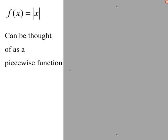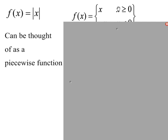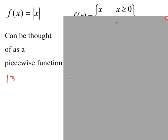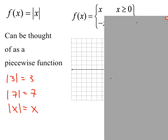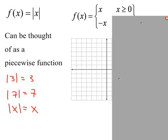Another classic piecewise function you might not think of is absolute value. When x is positive, the absolute value of x is just x — for example, |3| = 3 and |7| = 7. The tricky part comes when x is less than 0.